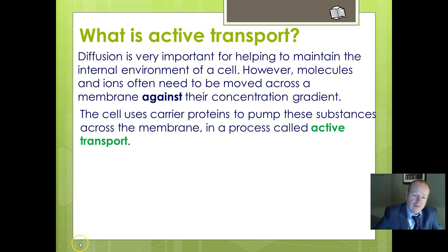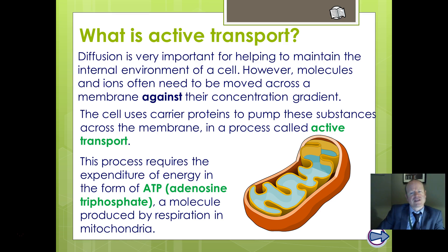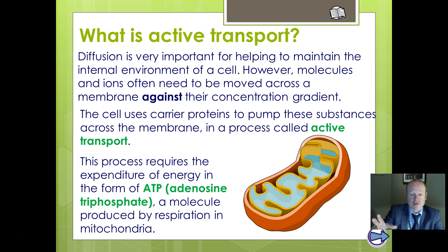To do this we're still using carrier proteins, which we met last time, and we need to carry out work in an active process. Active implies energy expenditure, and the energy is going to come from ATP — adenosine triphosphate. You might remember when we thought about nucleotides, we talked about ATP as a storage molecule, and it has a similar structure to nucleotides.